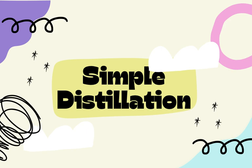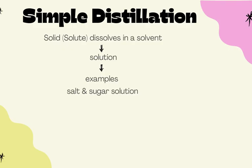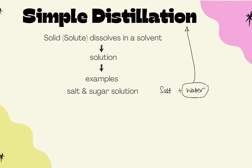Let us look at simple distillation. Simple distillation is a method used to get the solvent. When you have a solid dissolved in a solvent to form a solution, what we are trying to get is just the solvent. For example, from seawater containing salt and water, what we obtain from simple distillation will be distilled water.